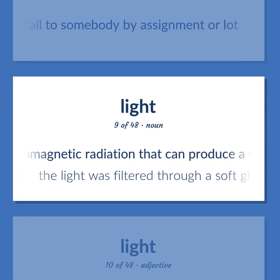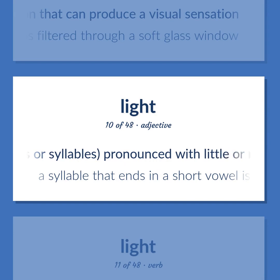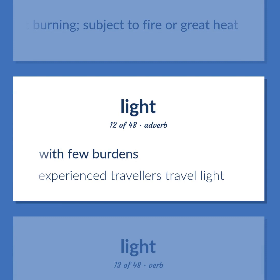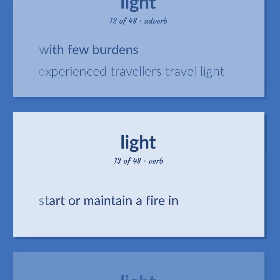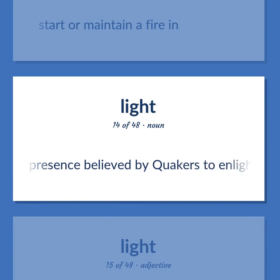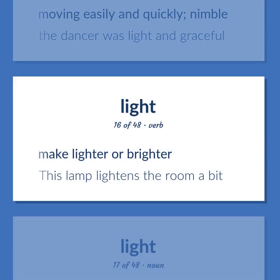Physics: electromagnetic radiation that can produce a visual sensation — 'The light was filtered through a soft glass window.' Used of vowels or syllables, pronounced with little or no stress — 'A syllable that ends in a short vowel is a light syllable.' Cause to start burning; subject to fire or great heat. With few burdens — 'Experienced travelers travel light.' Start or maintain a fire in. A divine presence believed by Quakers to enlighten and guide the soul. Moving easily and quickly; nimble — 'The dancer was light and graceful.' Make lighter or brighter — 'This lamp lightens the room a bit.'